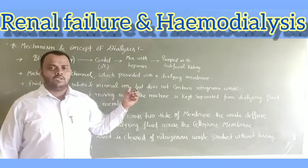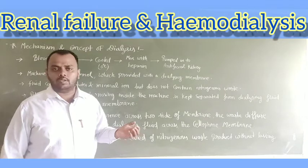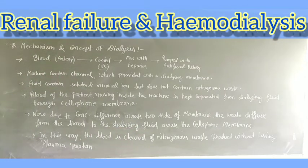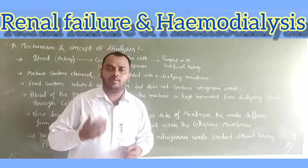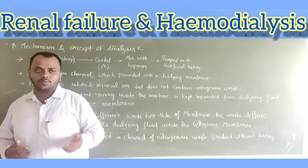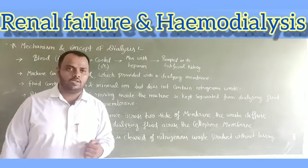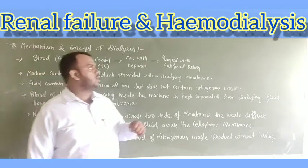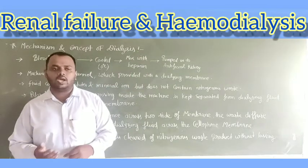To deal with this, we use a hemodialysis process, also called the artificial kidney, through which we can remove toxic material from the blood. The person suffering from renal failure has abnormally increased blood urea levels, and the process used to remove that urea from the body is called hemodialysis. The machine used is called the hemodialyzer.